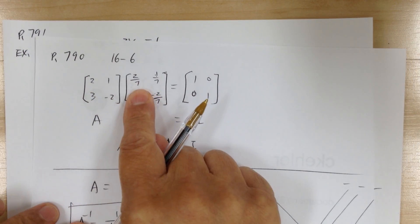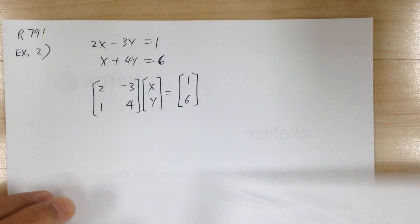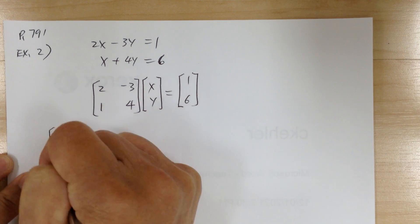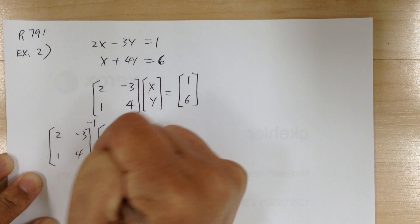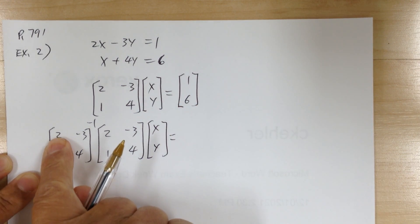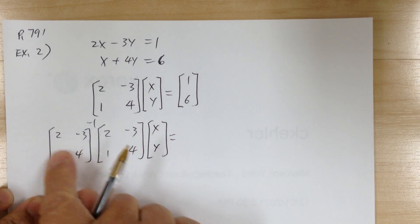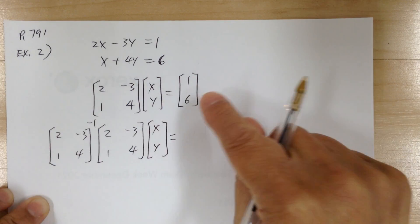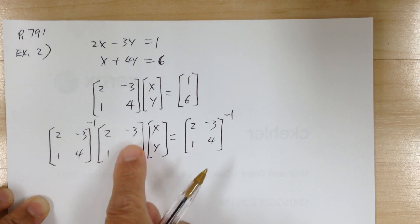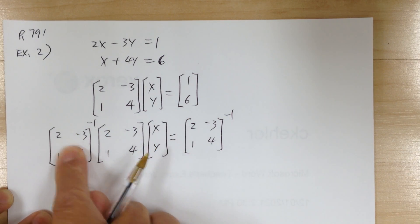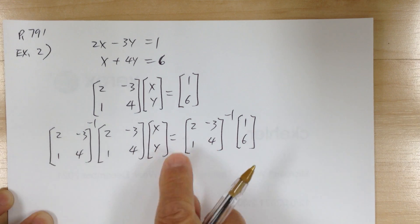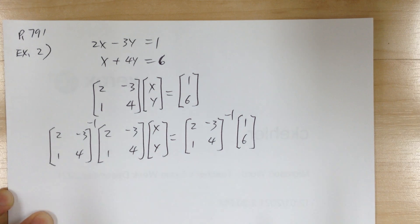To solve for x and y you need to get rid of the coefficient matrix. To do that, multiply by its inverse — because a matrix times its inverse equals the identity matrix I, which acts like 1. You must watch the order: multiply the inverse on the front of both sides. If you put it in front on one side, you must put it in front on the other side as well.